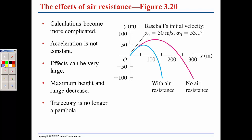Air resistance is very complicated. It can depend on the velocity or the velocity squared, depending on the type of object and atmosphere. It will always be in the opposite direction of velocity. When a ball is initially traveling at some velocity, air resistance is going to be in the opposite direction.